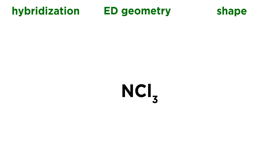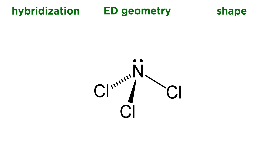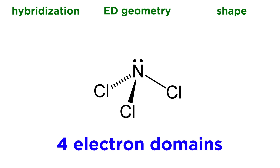Next, let's take a look at nitrogen trichloride, NCl3. We're going to need that Lewis dot structure. Nitrogen has five valence electrons, so it uses three of them to make the three covalent bonds to the three chlorine atoms, and then two are left over as a lone pair. That gives us four electron domains surrounding the nitrogen atom — three bonding pairs to the chlorine atoms and one lone pair. Anytime we have four electron domains, that central atom is sp3 hybridized.